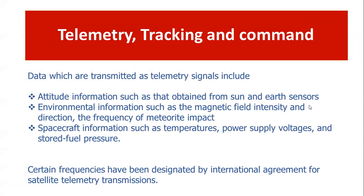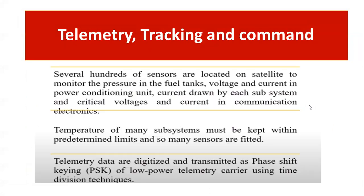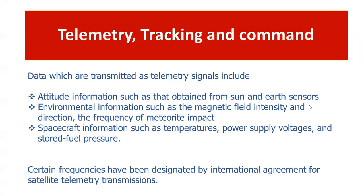This data should be continuously coming from the satellite to the telemetry system through the receiving antenna. The data is then processed and checked for proper values. If any deviation is found, a correction command is sent back through the command system. Certain frequencies, designated by international agreement, must be used for satellite telemetry transmissions — governed by international satellite regulations.